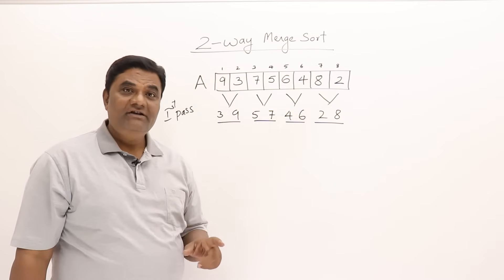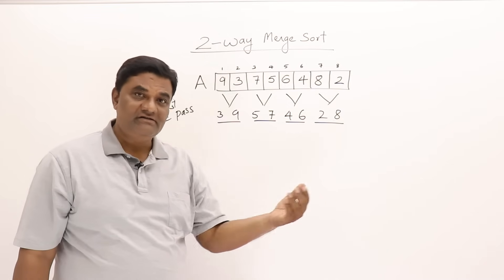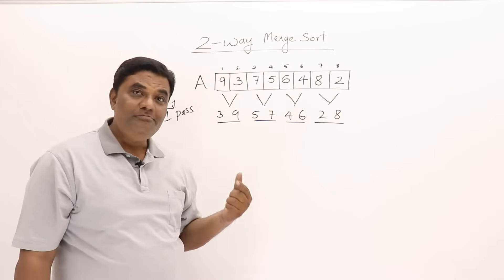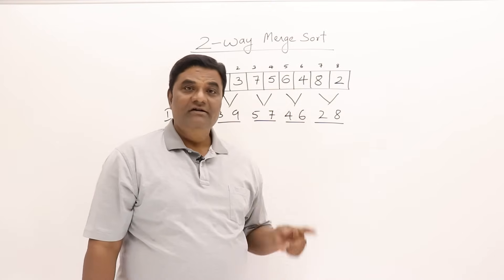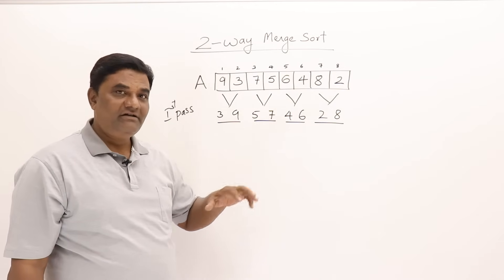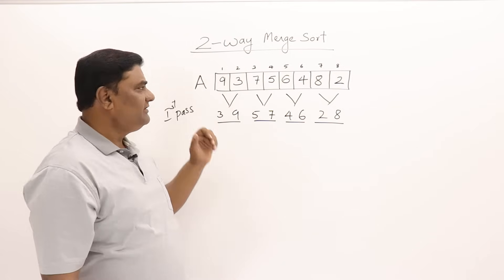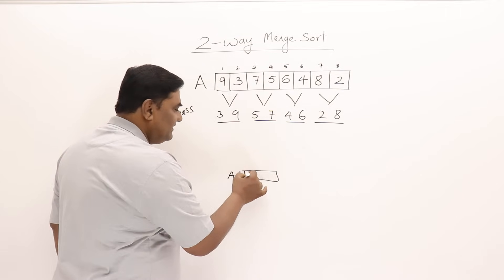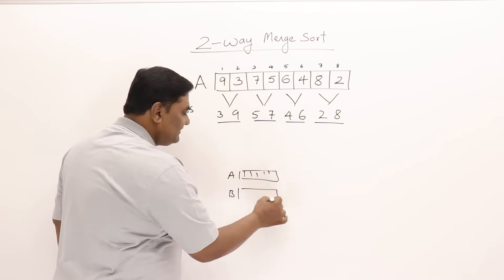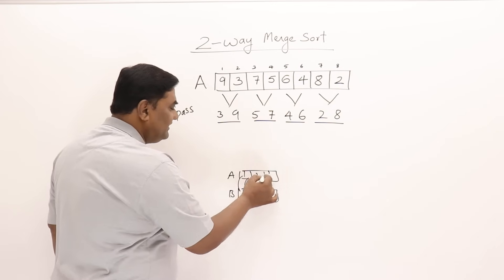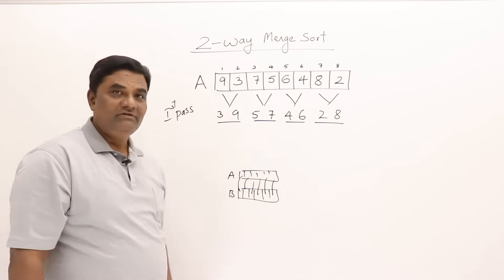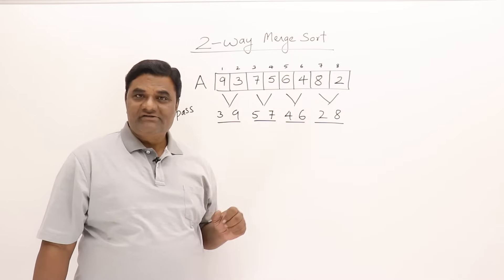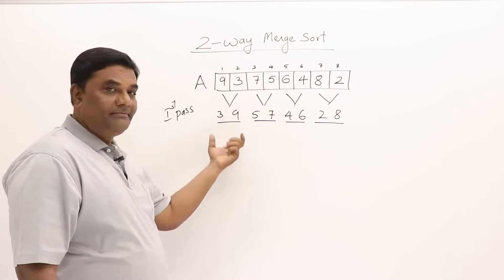Note that when merging, the result must be stored in a separate array B, since merging two lists requires a third list. After merging into B, copy the results back to array A, so the lists remain in A. Now with four lists in A, we again pick pairs and merge: [3,9] and [5,7] merge into [3,5,7,9]; [2,8] and [4,6] merge into [2,4,6,8]. After pass two, we have two lists of four elements each.